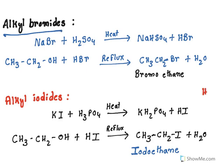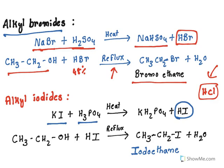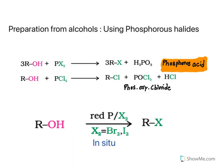Unlike HCl gas, HBr and HI are not readily available and need to be prepared. Sodium bromide combined with sulfuric acid on heating gives sodium hydrogen sulfate and hydrogen bromide; this HBr is then refluxed with alcohol — for example, 48% hydrobromic acid gives bromoethane. Similarly, alkyl iodides are prepared from potassium iodide and phosphoric acid, which gives hydroiodic acid, and that is refluxed with alcohol to give iodides.